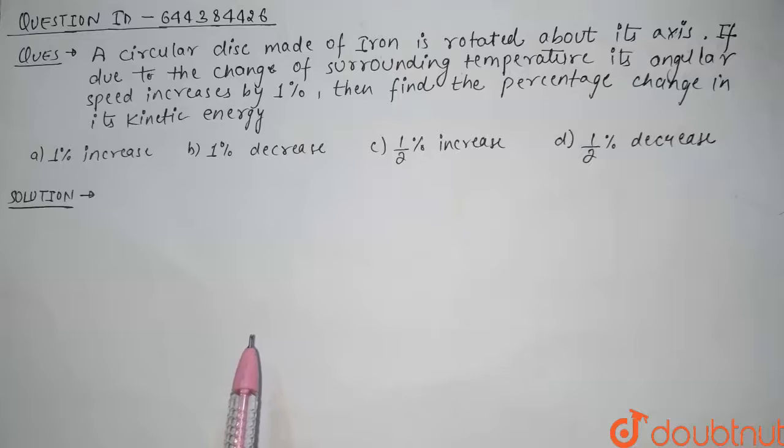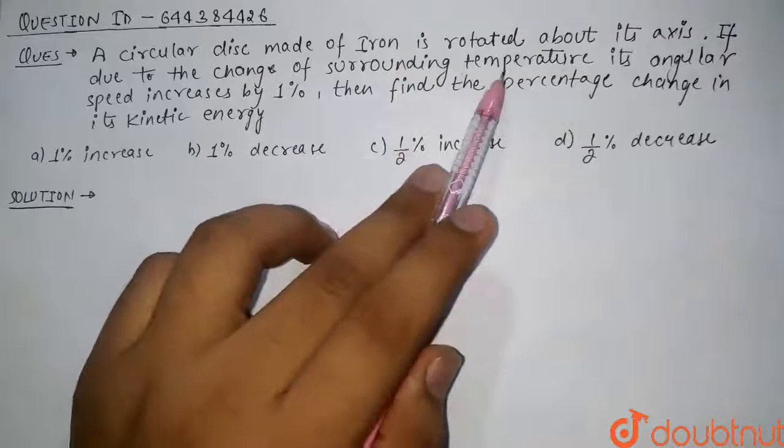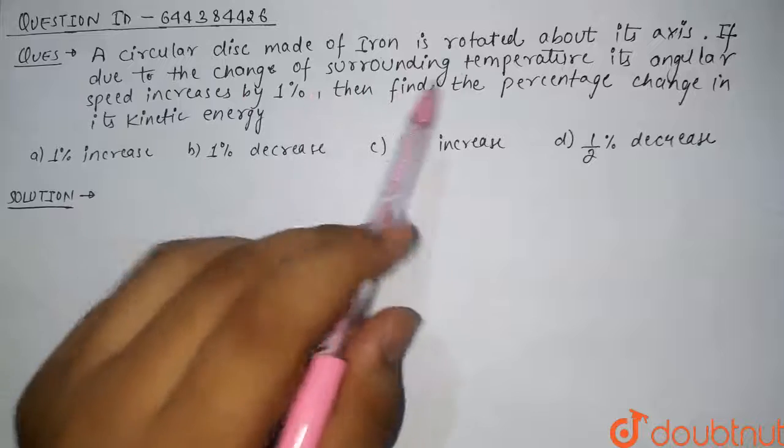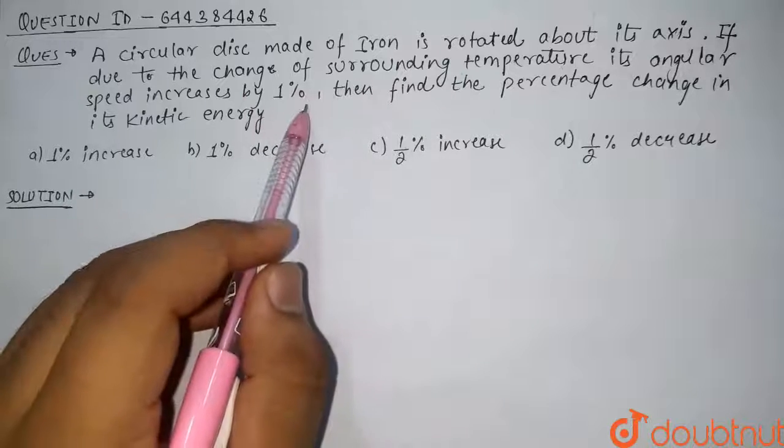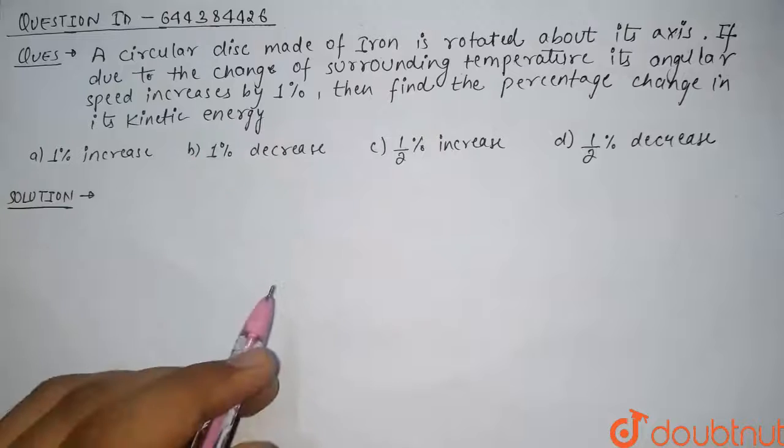Hello guys, so today's question is: A circular disk made up of iron is rotated about its axis. If due to change of surrounding temperature its angular speed increases by 1%, then find the percentage change in its kinetic energy.